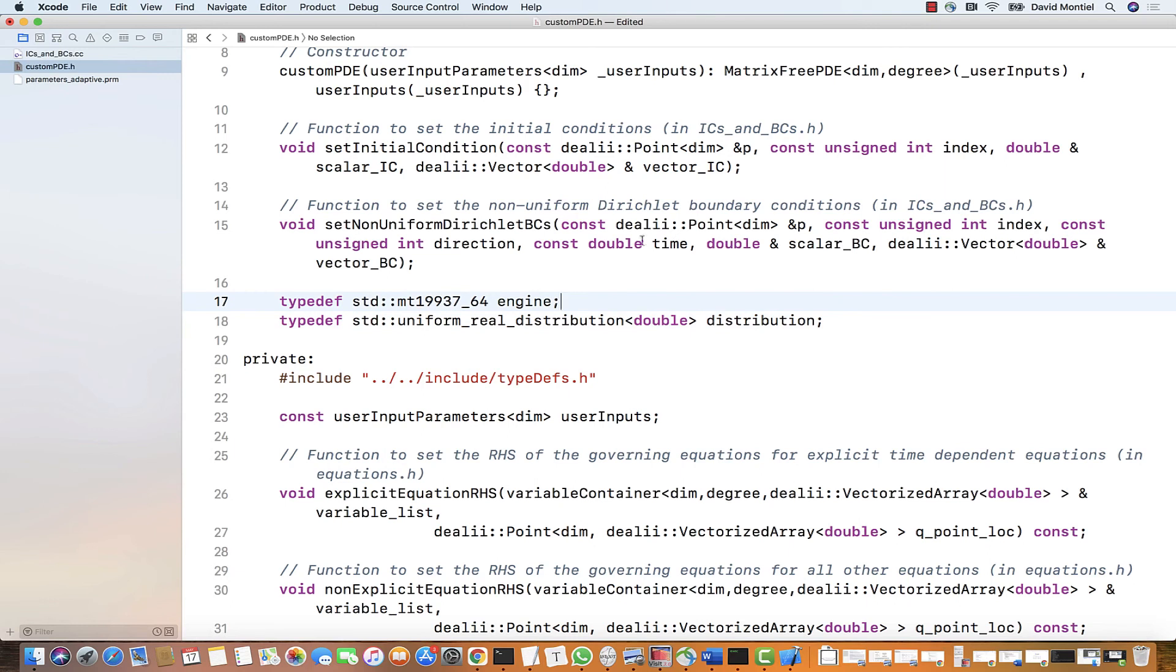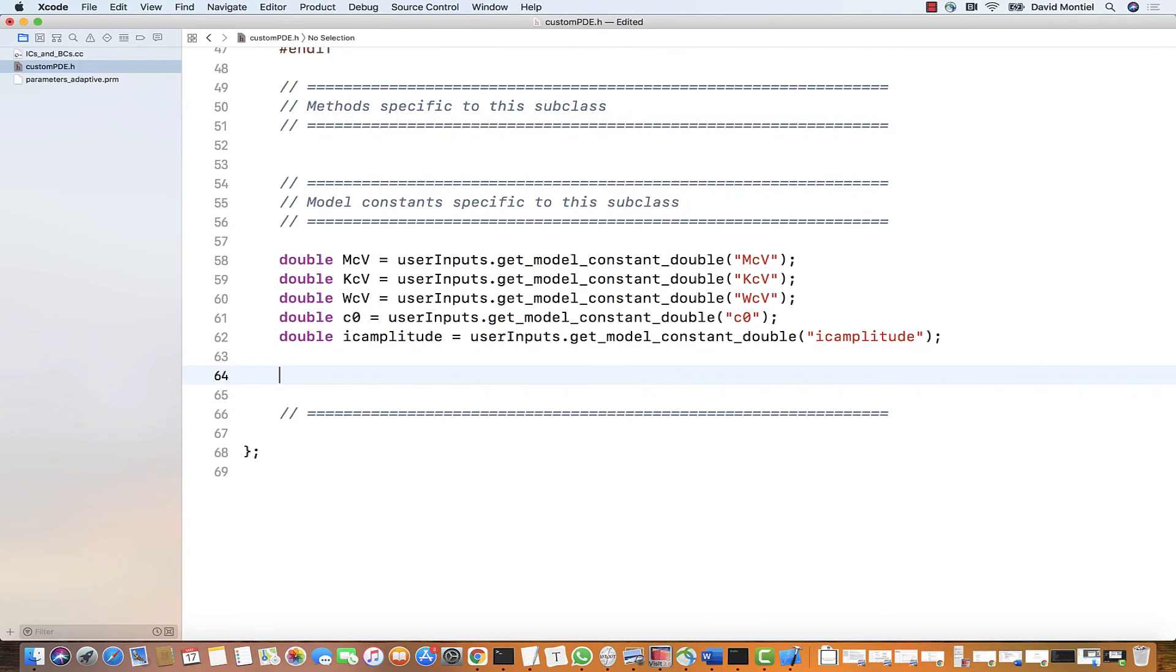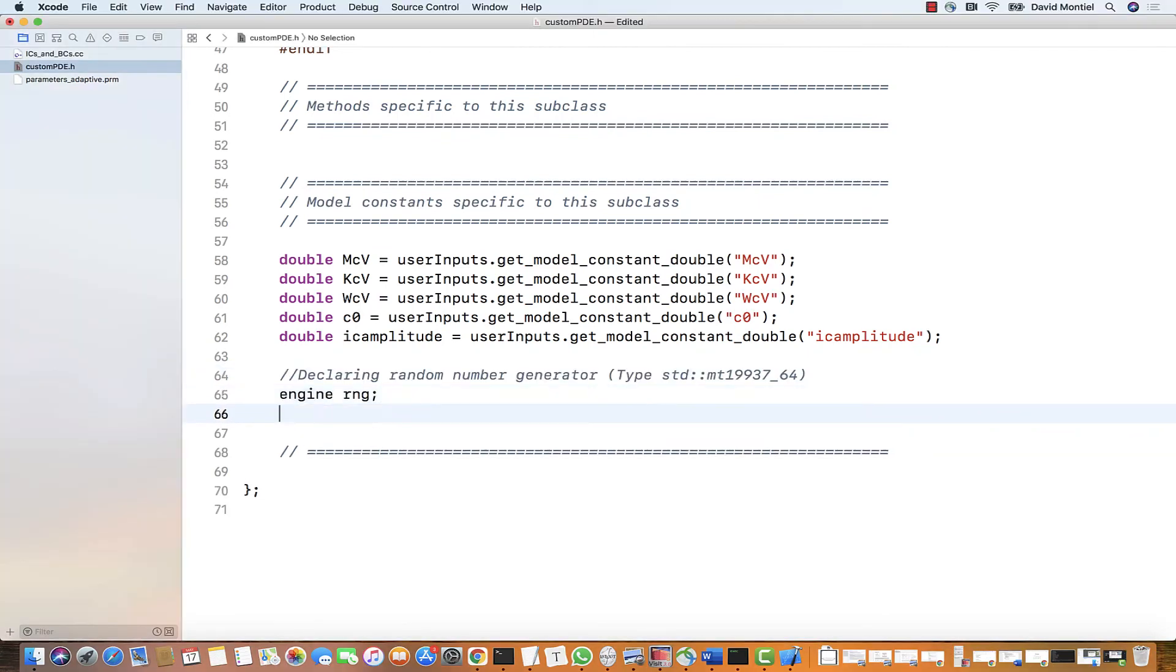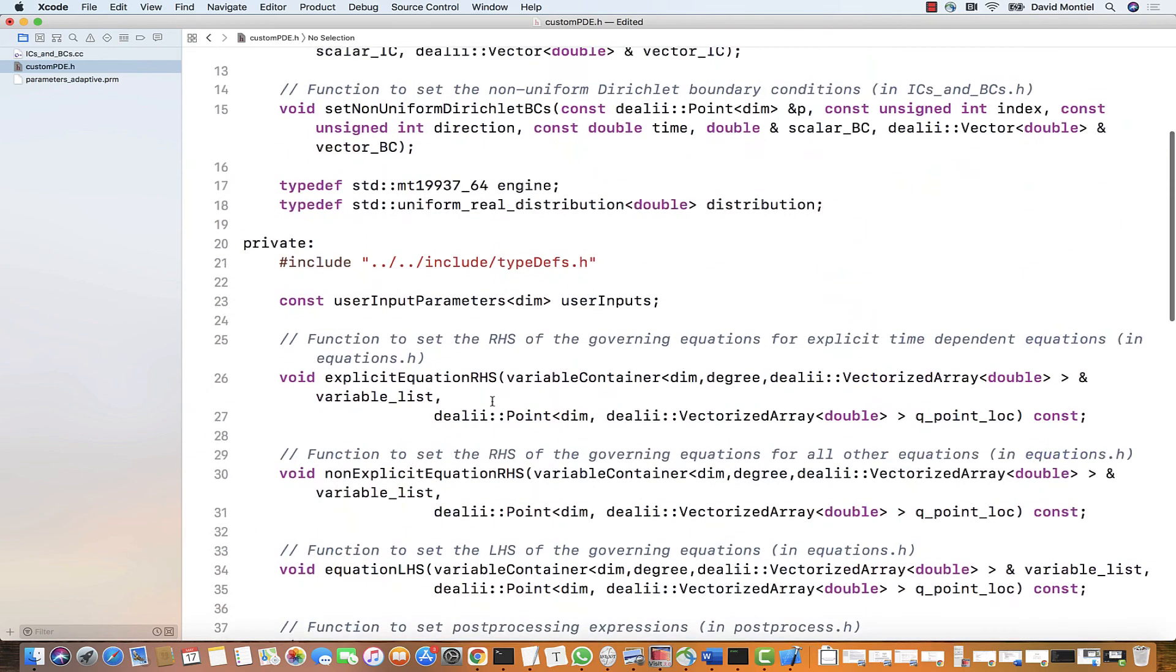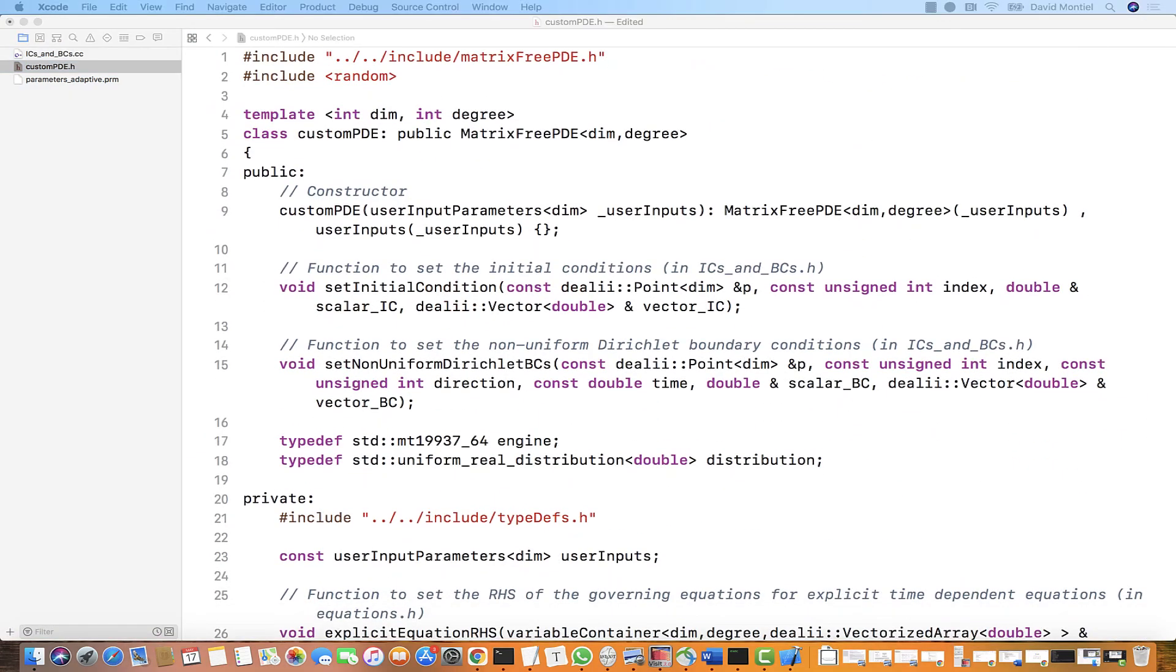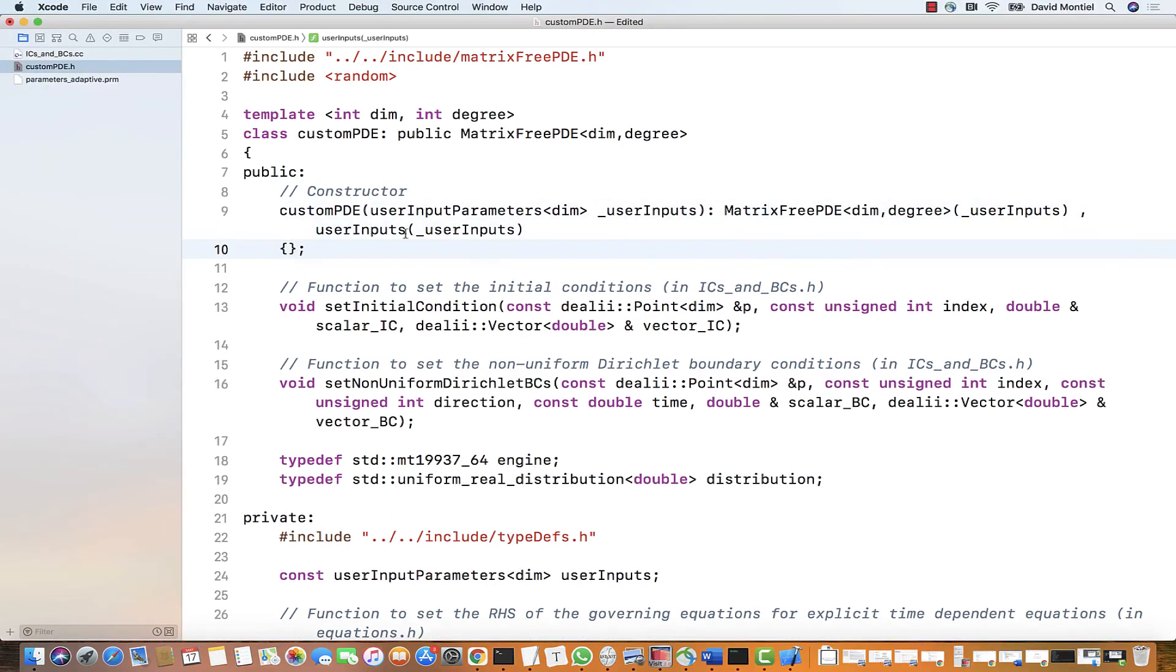And the second one we will call dist and it is for a class needed to generate a uniform real distribution of double type numbers. Next, we will declare instances of these two types in the private section that we will initialize and use in the code. We choose the names RNG of type engine and distribution of type dist.